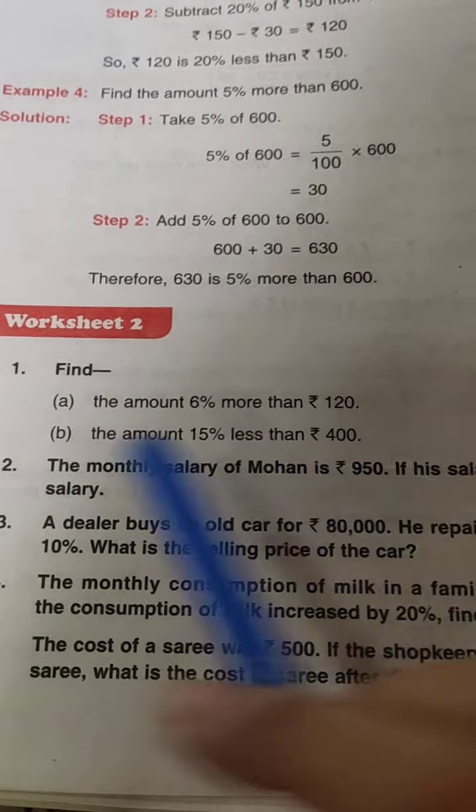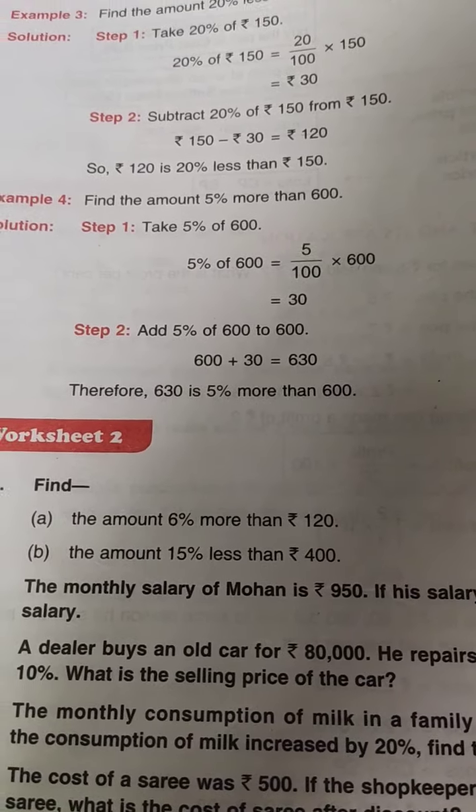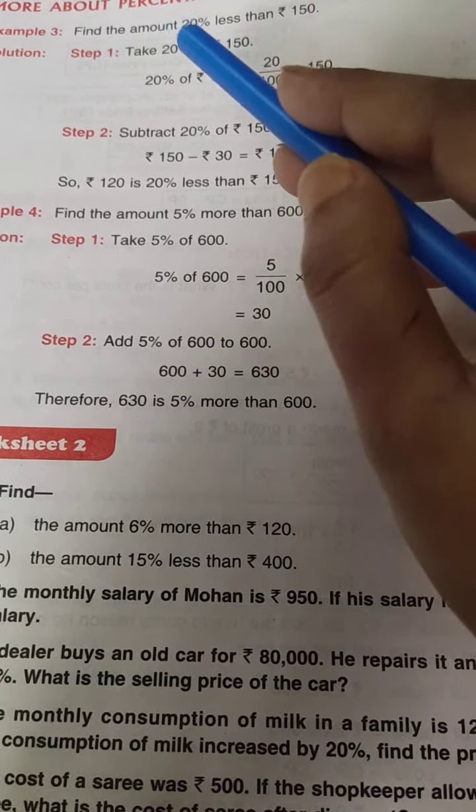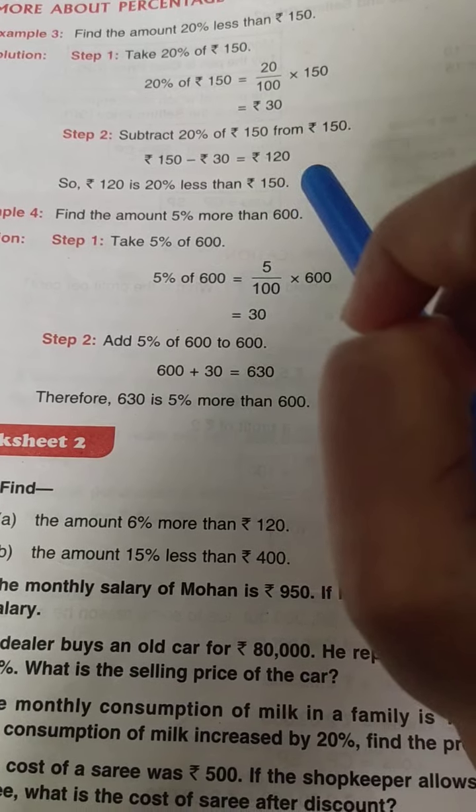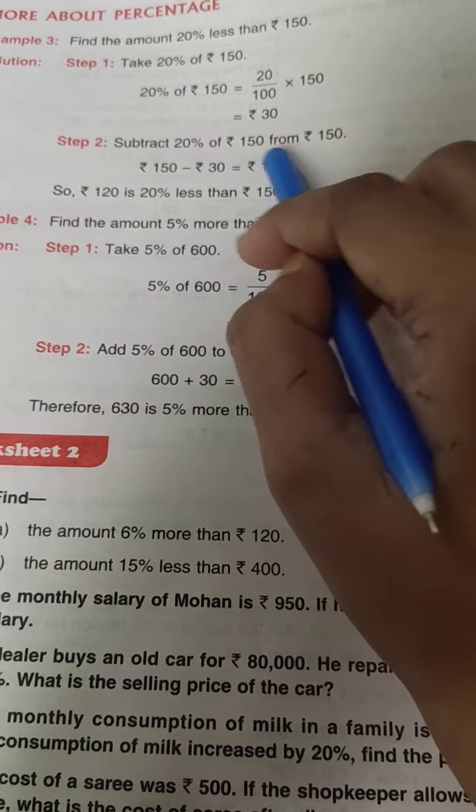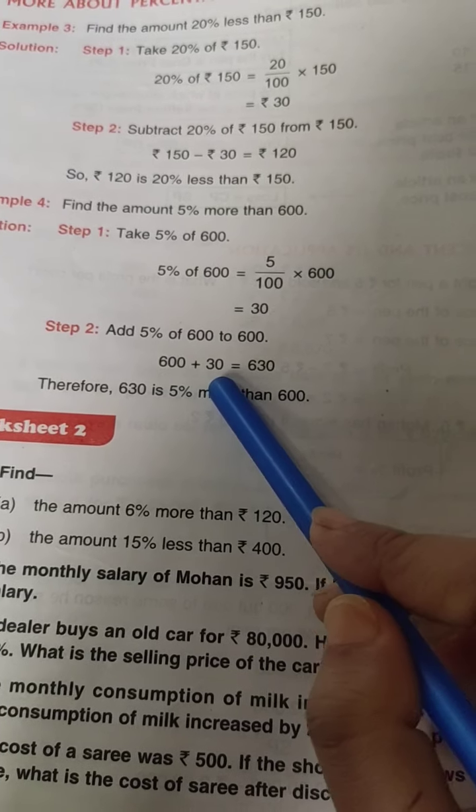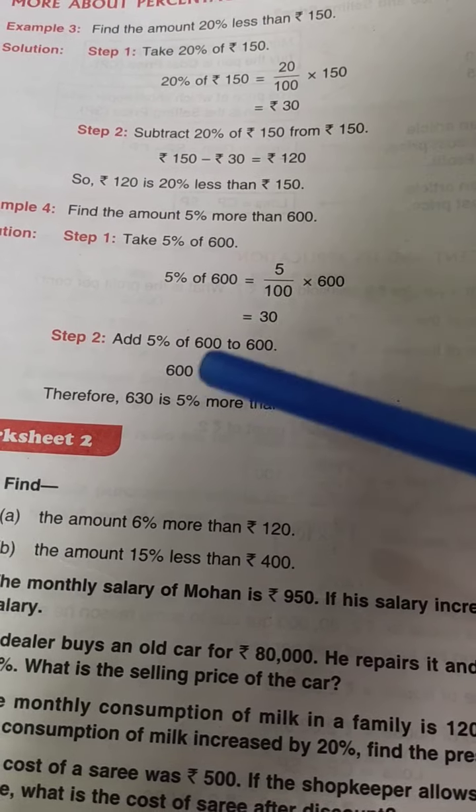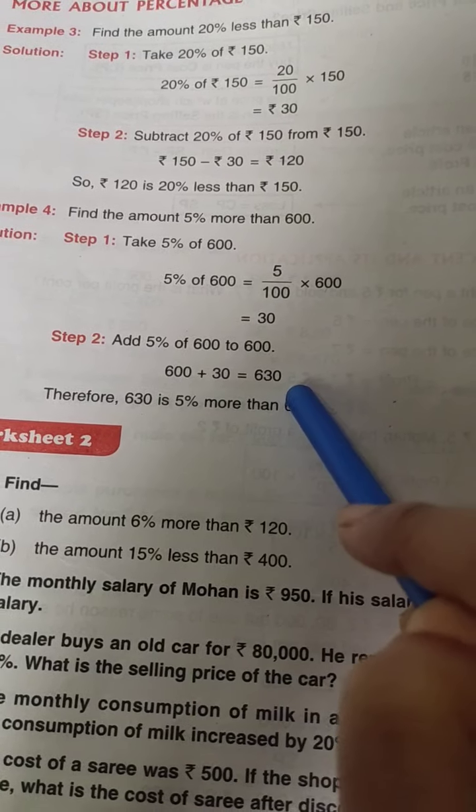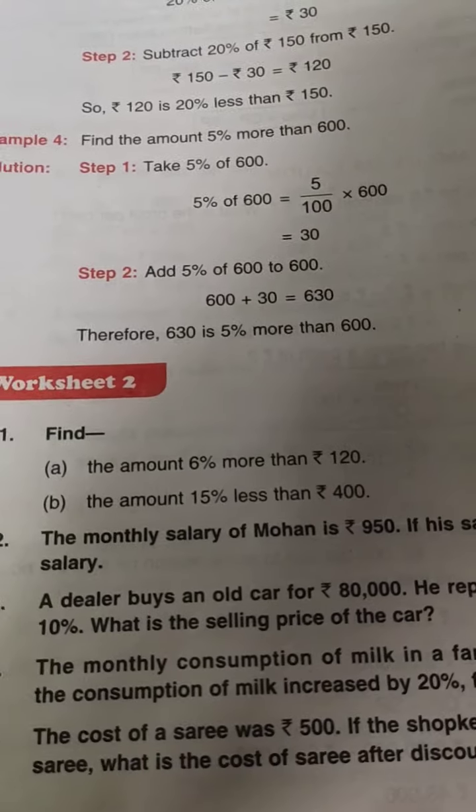Now in worksheet 2 is same as worksheet 1. Only two things you have to keep in mind. When you see the words like less, subtract, decrease, then you will subtract. You have to do one operation of subtraction. And when you see the words like more, increase, add, then you have to do an operation of addition in the question.